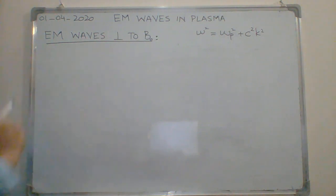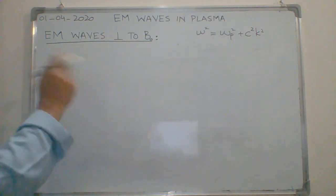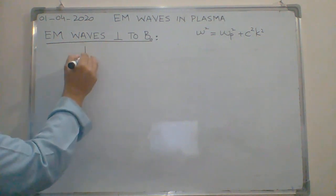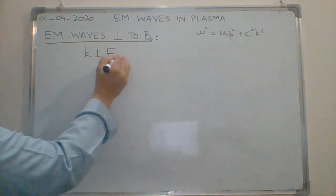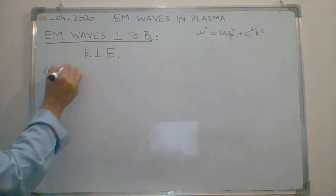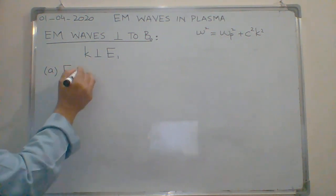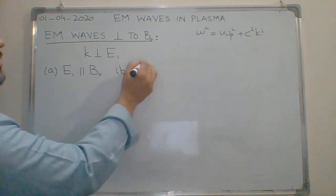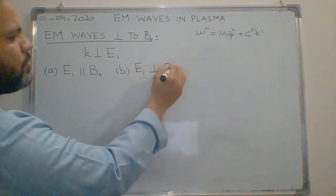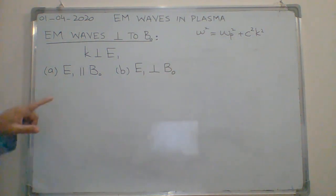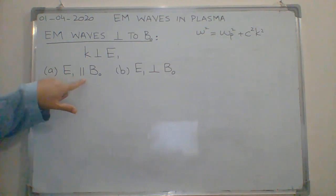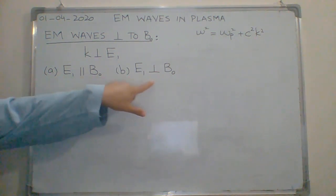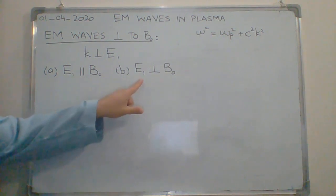First we are going to consider electromagnetic waves propagating perpendicular to B0. There are again two sub-cases. As we know for electromagnetic waves, K is perpendicular to E1, but this E1 can be parallel to B0 or perpendicular to B0. First I am going to consider the case where the perturbed electric field E1 is parallel to the applied magnetic field B0, and then we will consider the second case where E1 is perpendicular to B0.